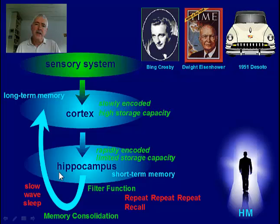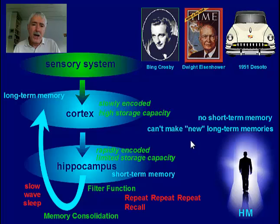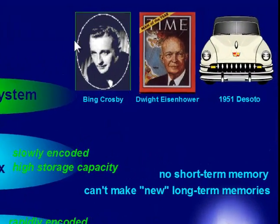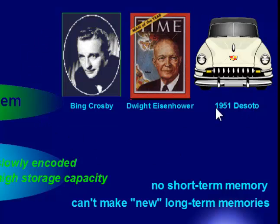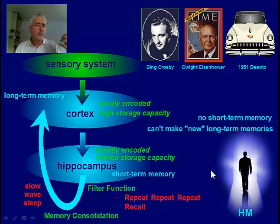Getting back to H.M.: his problem is that he can make no short-term memories because he lacks the hippocampus. This is compounded by the fact that he can't make any new long-term memories either, because memories are made first short-term and then converted to long-term. Without a hippocampus, no new memories can be made. And yet all of H.M.'s existing memories — stored in his cortex — were made prior to the loss of the hippocampus. So H.M. is truly someone locked into the past, with all memories from before 1953 and no ability to produce new ones.